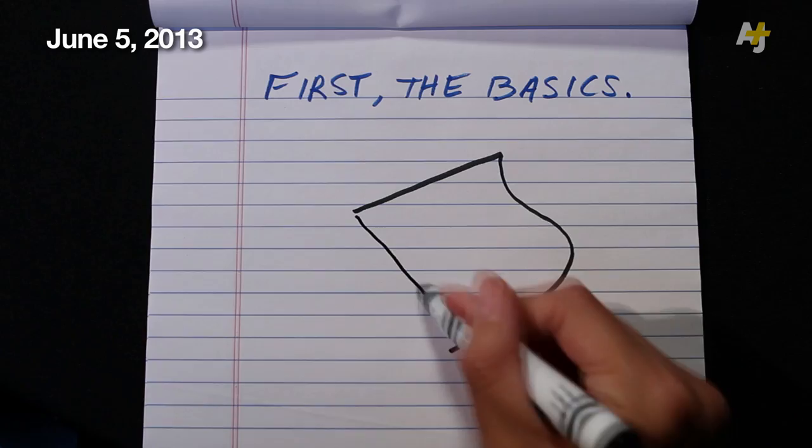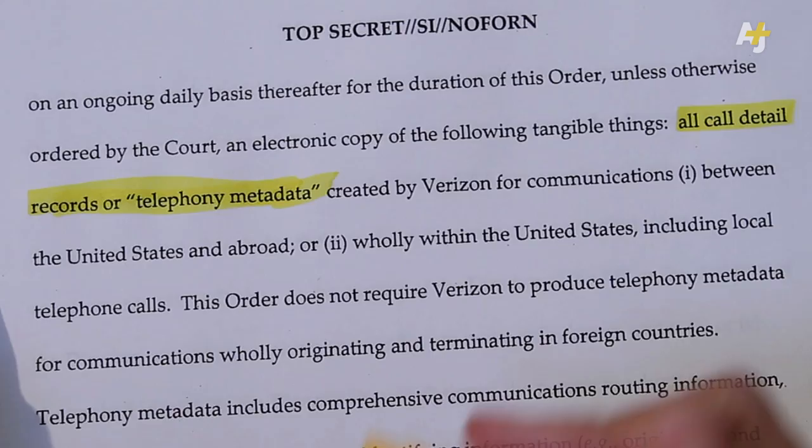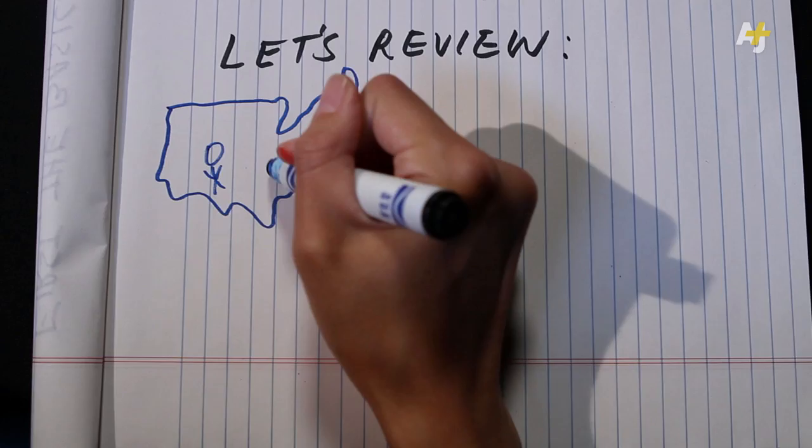Everyone started talking about this when UK newspaper The Guardian published a top-secret document from a then-anonymous source. It's an order from the Foreign Intelligence Surveillance Court authorizing the FBI to collect call detail records or telephony metadata from calls made inside the U.S. or between the U.S. and other countries via Verizon.